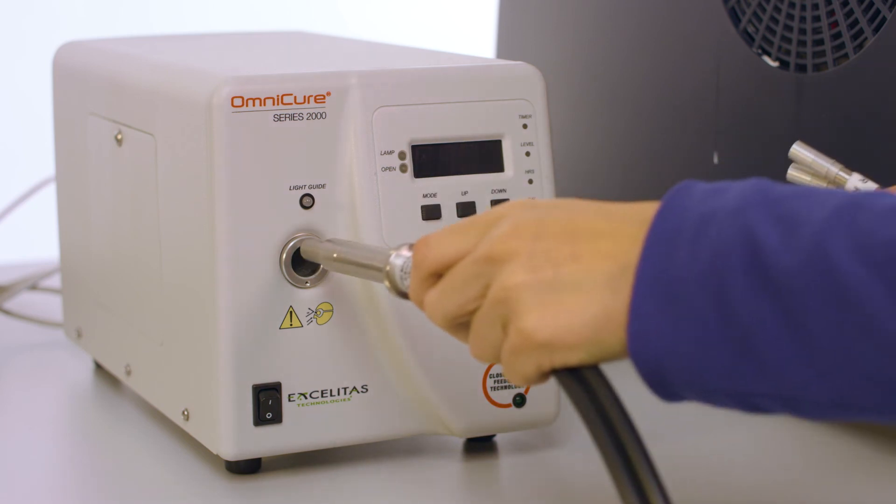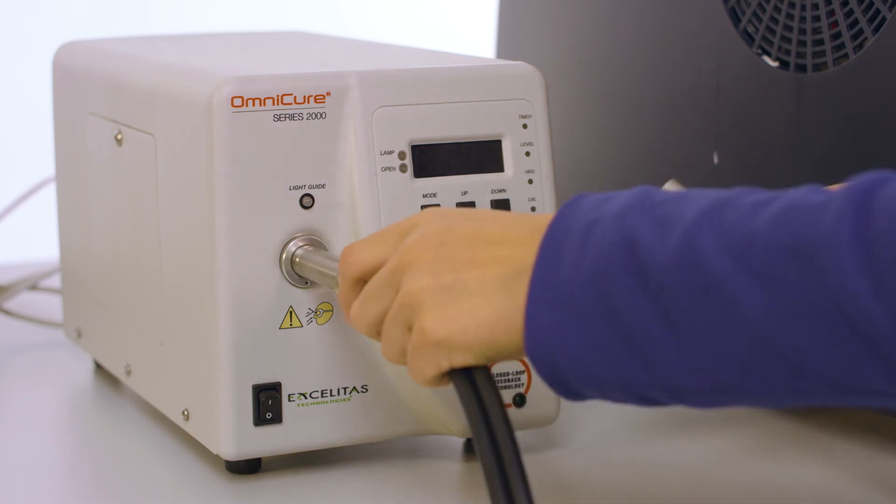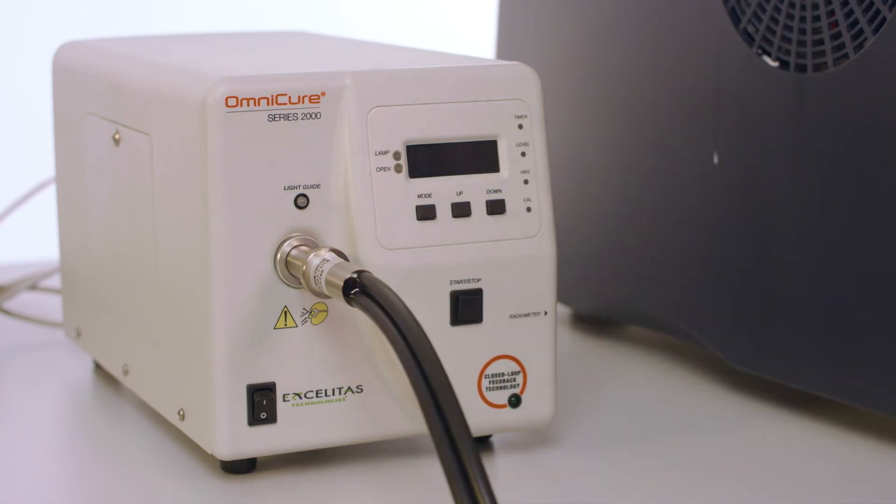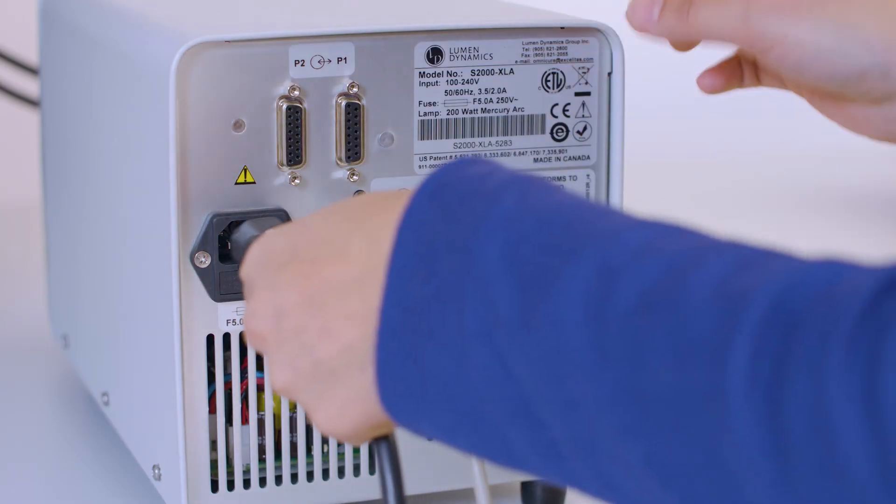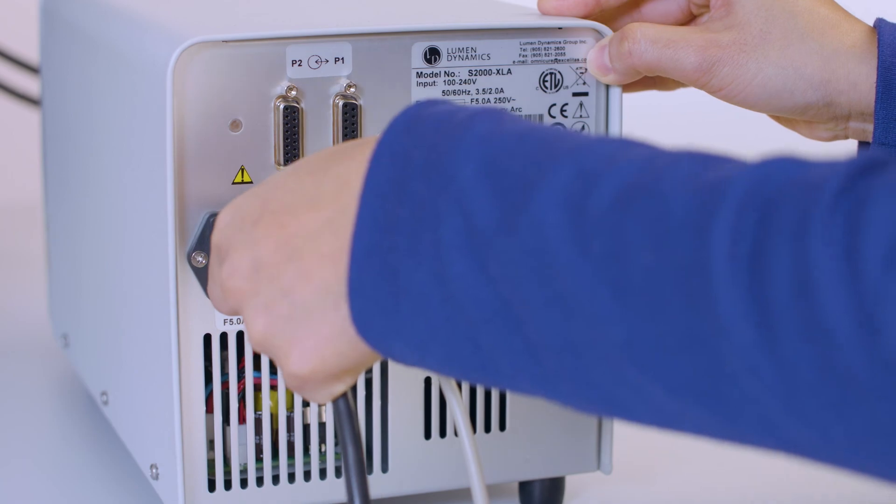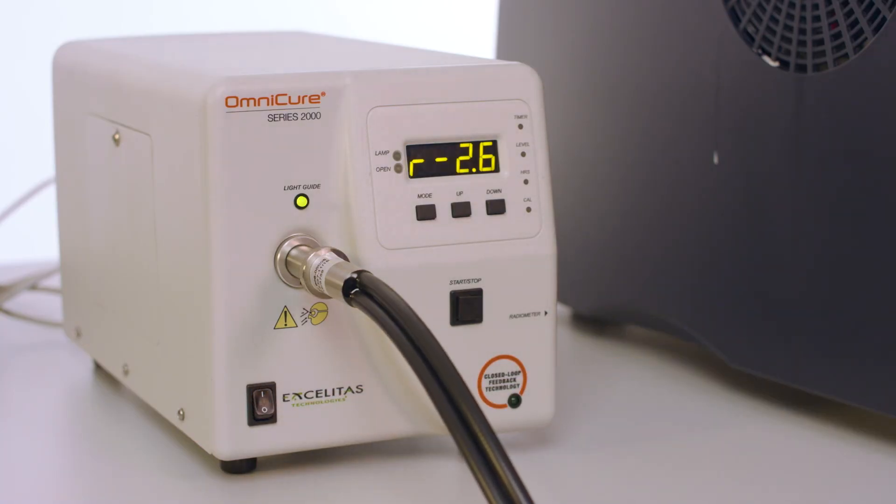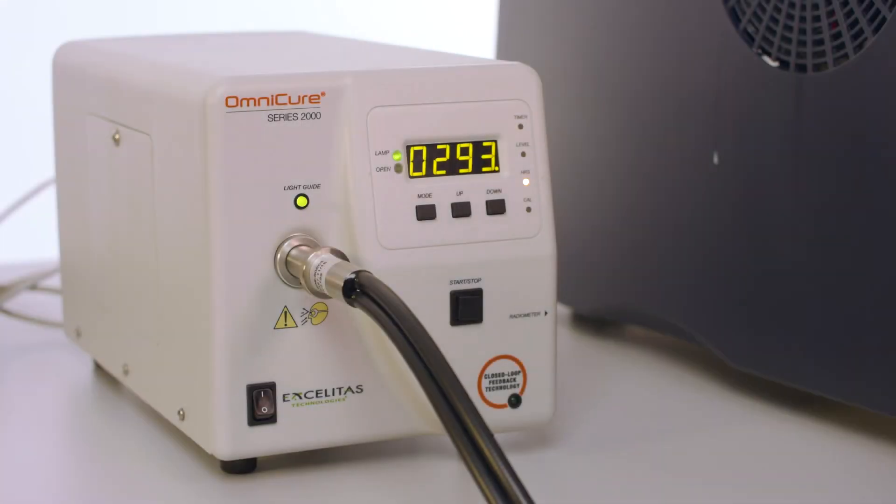Insert the light guide into the light guide port on the left side of the PCA unit until it clicks. Plug the PCA power cord to the back of the PCA unit. Turn on the UV lamp and allow it to warm up. The LED will stop flashing when it's ready for operation.